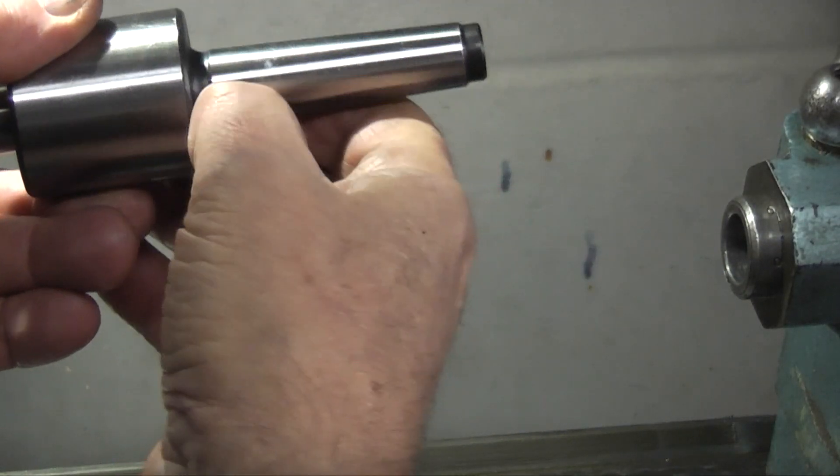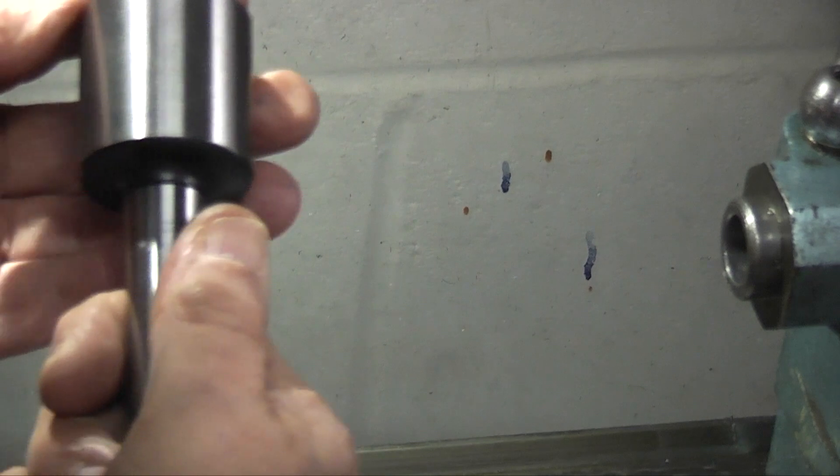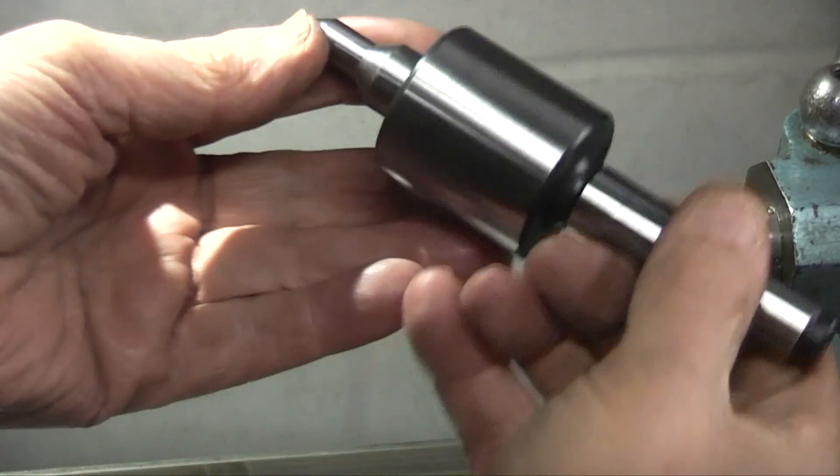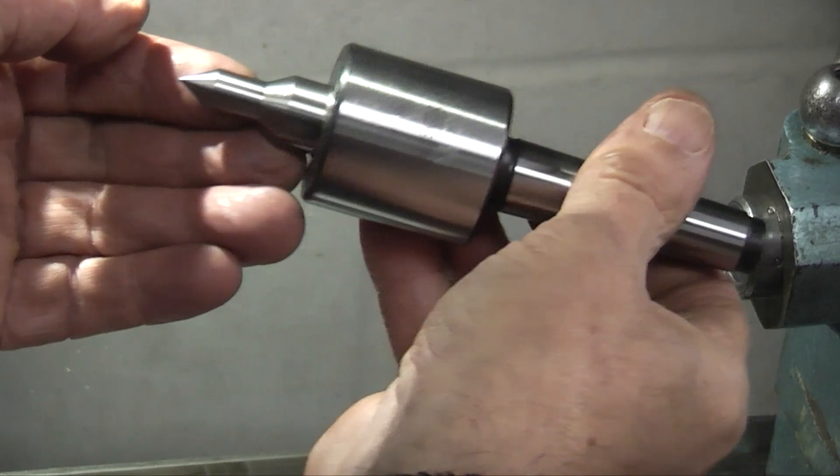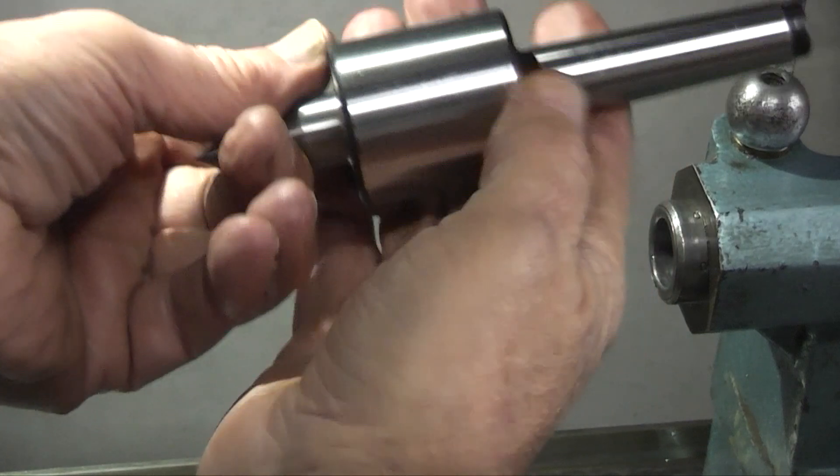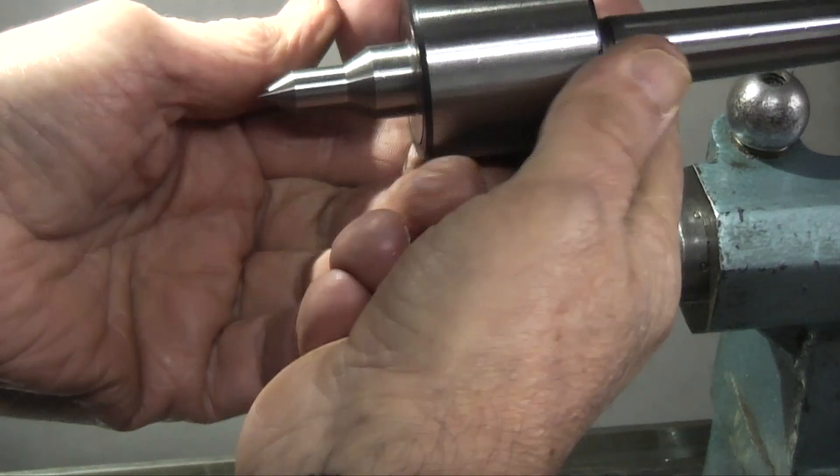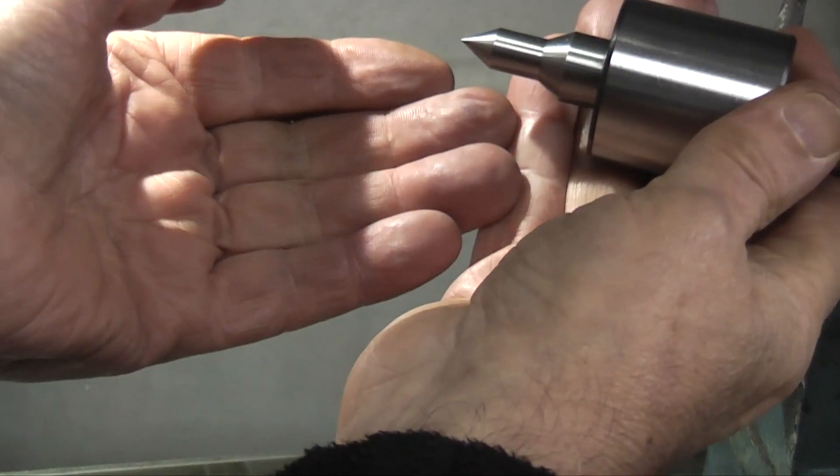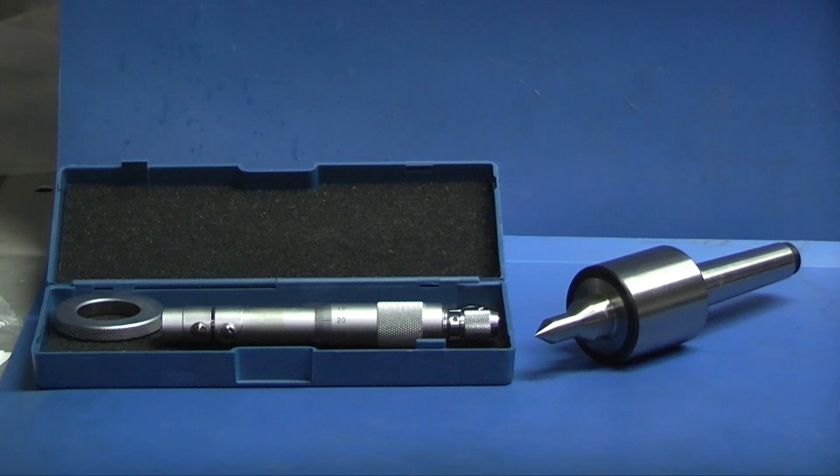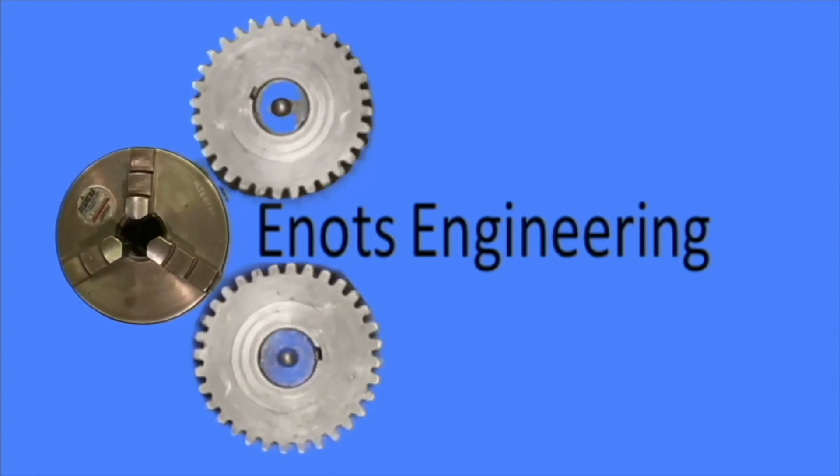So to sum up on the revolving centre or live centre, the run out on the tip which is the part that comes into contact with the workpiece is about three tenths, and the run out on the diameter is about two thou. For the price of just over twenty six dollars I think it's good value for money and we'll see how it performs when I use it in some of my projects. Well that's it for today, hope that was interesting, hope you liked it and we'll see you next time on Weenots Engineering.